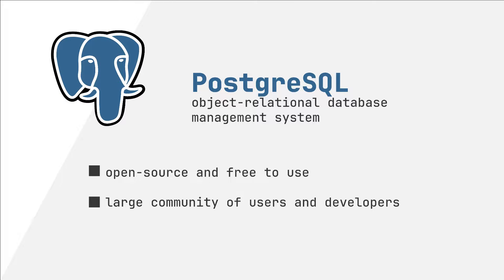PostgreSQL is a powerful object-relational database management system that allows you to store and process huge amounts of information. PostgreSQL has many features, including support for various data types, multi-version control, triggers, stored procedures, and more. PostgreSQL is open-source and free to use, making it accessible to a wide range of users. It also has a large community of users and developers working to improve and develop the system.